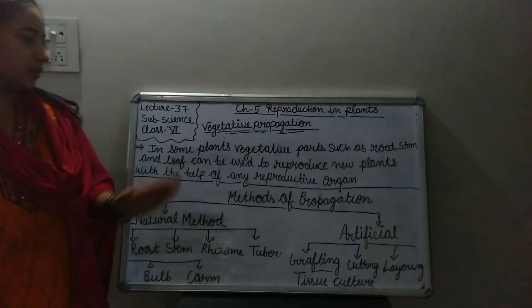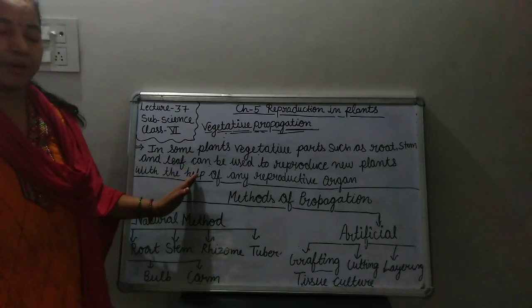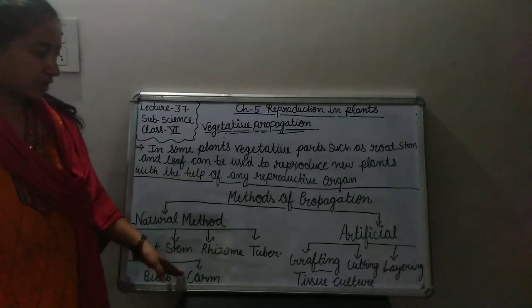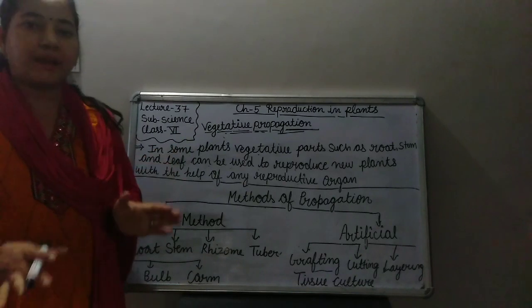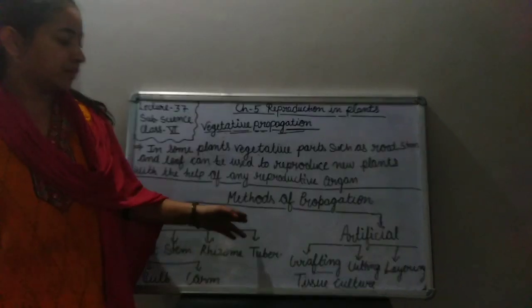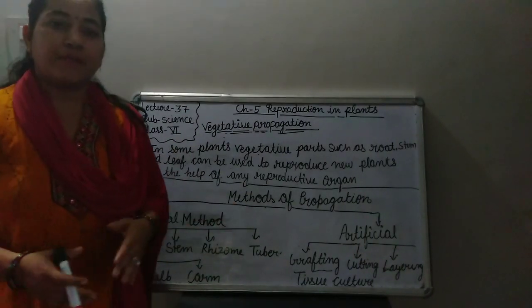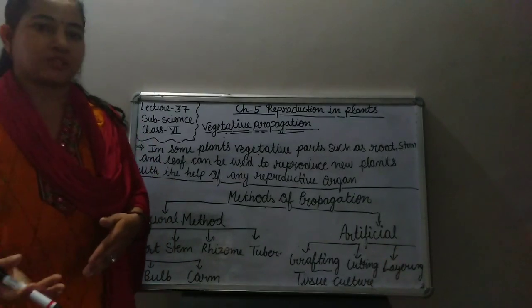All students should read the vegetative propagation definition and flow chart, and also write the definition and make the flow chart in your fair copy. We will discuss our next topics in our next class. Thank you.